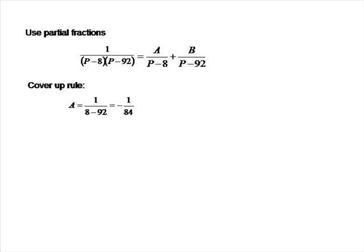Similarly, B is the term over (p minus 92), and p minus 92 equals 0 when p equals 92. Covering up the factor of (p minus 92) and setting p to 92 in what's left, B must be 1 over (92 minus 8), so B equals 1 over 84.